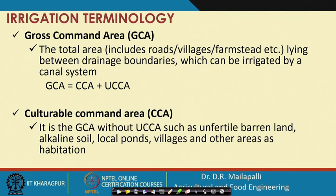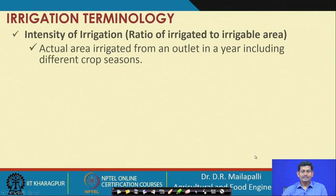Intensity of irrigation is the ratio of irrigated area to irrigable area. Based on available water resources, only part of the irrigable land may be irrigated in a season, and the ratio of irrigated land to irrigable land gives the intensity of irrigation.